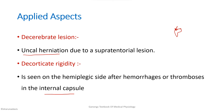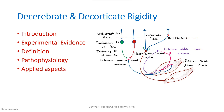To complete the answer, structure it as: introduction covering normal posture, experimental evidence with spinal and decerebrate and decorticate animals, definitions of decorticate and decerebrate rigidity, pathophysiology with a diagram, and applied aspects. That covers the full eight-mark answer for this topic.